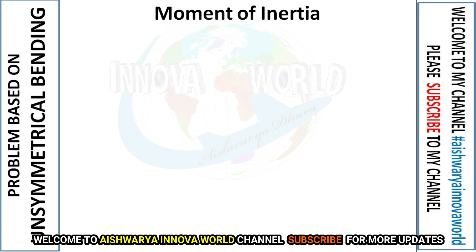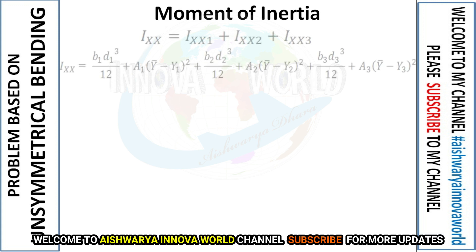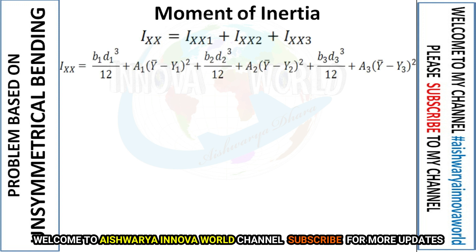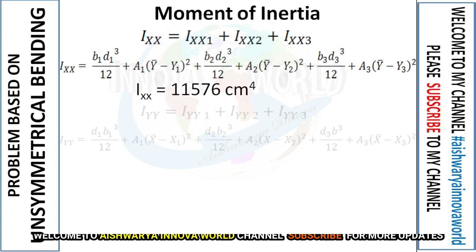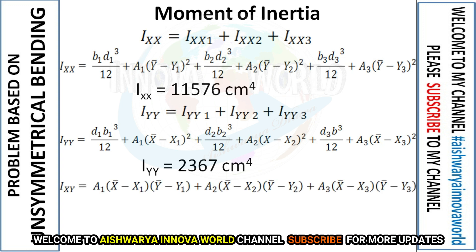To find the moments of inertia: Ixx, Iyy, and the product moment of inertia Ixy. Using the formula b·d³/12 + A·h² for each section and summing, we get Ixx = 11,576 cm⁴, Iyy = 2,367 cm⁴, and Ixy = −3,726 cm⁴.